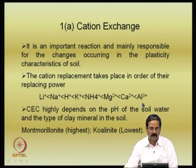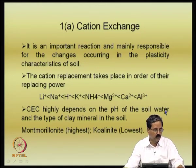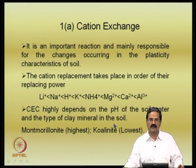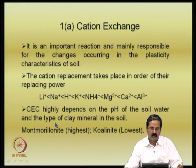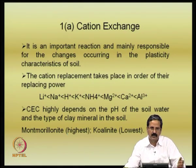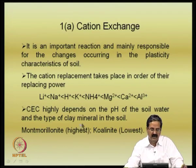The cation exchange capacity depends on the pH of the soil pore water — the pore water pH has a big influence on cation exchange capacity — and also the type of clay mineral. There are different types of clay minerals: montmorillonite, kaolinite, and illite. The specific surface of montmorillonite is very high. Sodium bentonite has the highest cation exchange capacity, whereas calcium bentonite has a much lower capacity due to the valency.